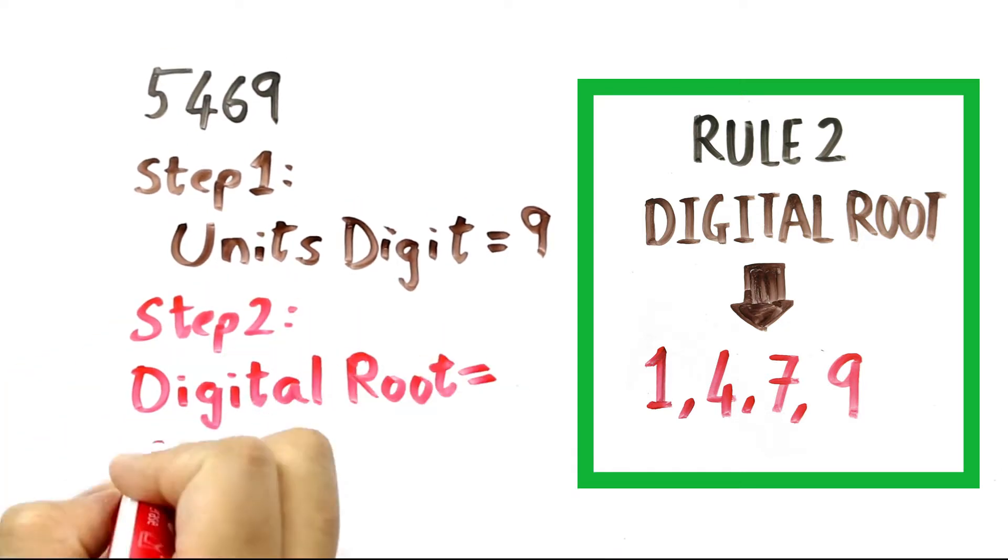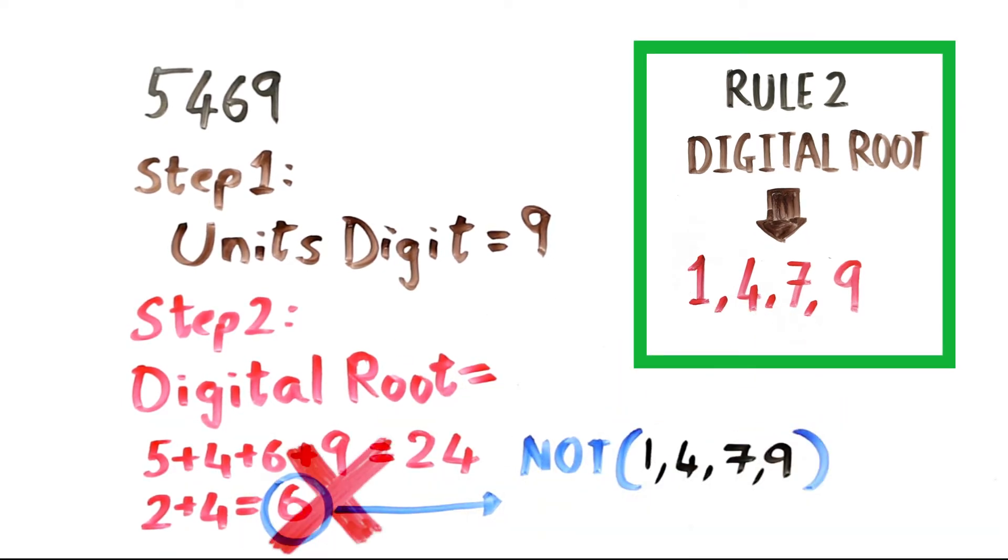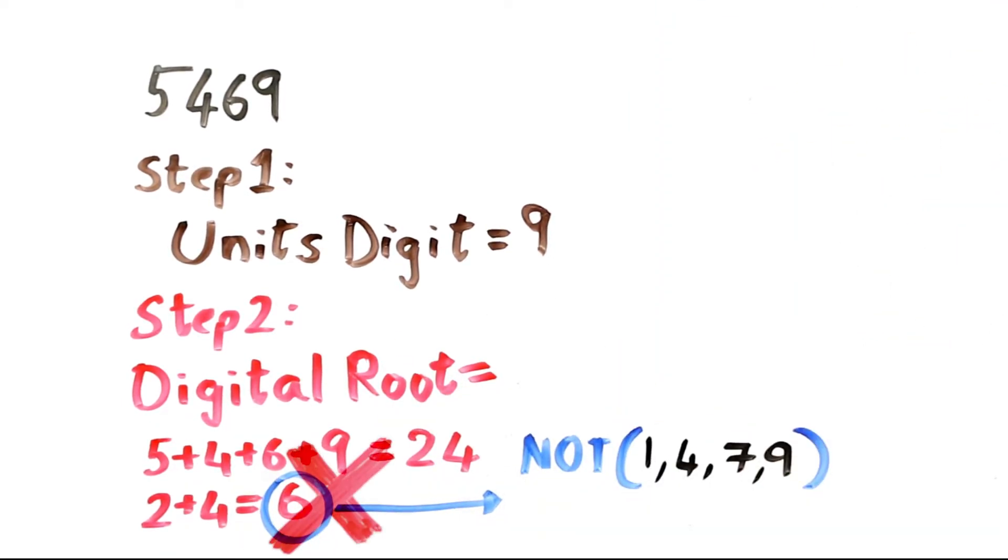Here, 5 plus 4 plus 6 plus 9 equals 24, and 2 plus 4 equals 6. Now this does not fulfill the condition. So our test is over and we can say that 5469 is not a perfect square.